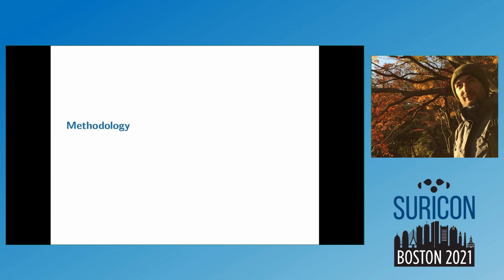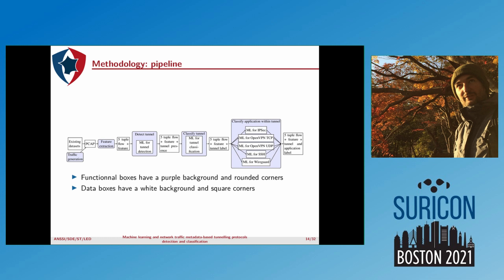Now, what is our processing methodology? We have a pipeline that explains how we use machine learning to process the data. First, we have some existing datasets that we gathered, and we also generated some traffic — I will explain how shortly. Using the existing datasets and generated traffic we obtain PCAPs. Then we perform feature extraction to obtain the five-tuple flow and associated features. We apply ML for tunnel detection, obtaining the five-tuple flow, the features, and the tunnel presence label. We then classify the tunnel using ML, obtaining a tunnel label for each five-tuple flow. Considering the tunnel label, we apply a distinct ML model for each flow, and finally obtain the five-tuple flow, features, and both the tunnel and application labels.